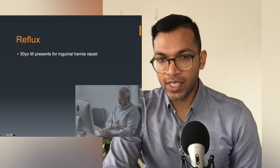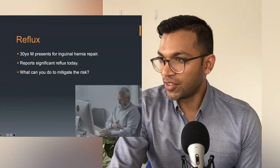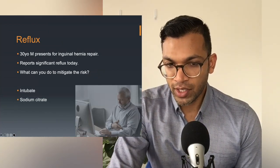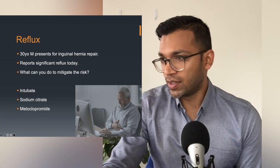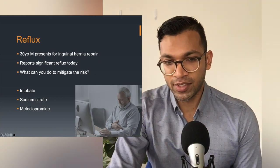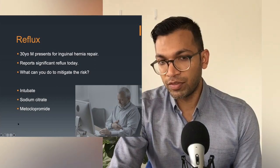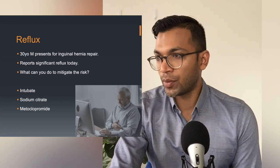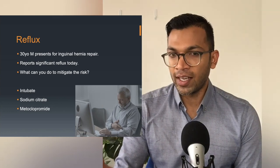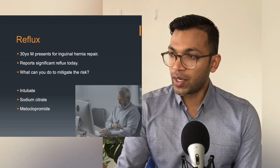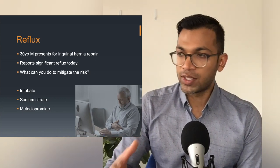Next case — a 30-year-old male presents for inguinal hernia repair and reports significant reflux today. What can you do to mitigate the risk? You can give sodium citrate, metoclopramide to increase gastric emptying, and PPIs over hours to days may work as well. For your information, most anesthetists would rarely postpone an operation for reflux alone — they'd likely do a rapid sequence induction and intubate rather than placing an LMA. Think: what can I do right now to solve this?